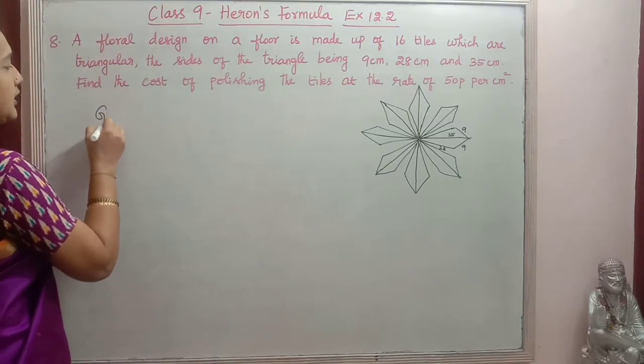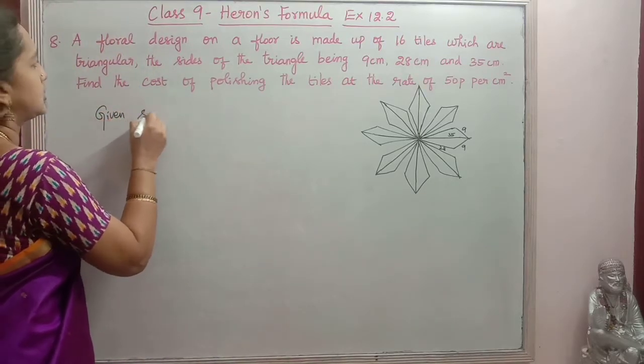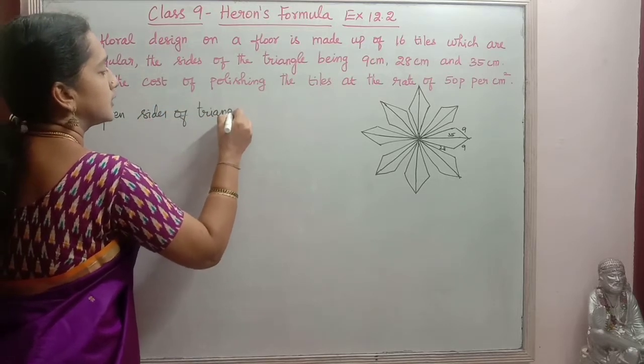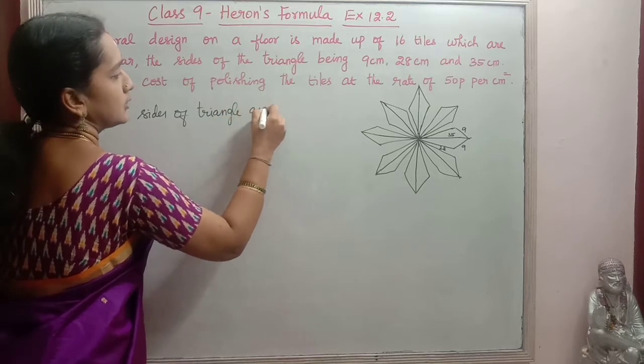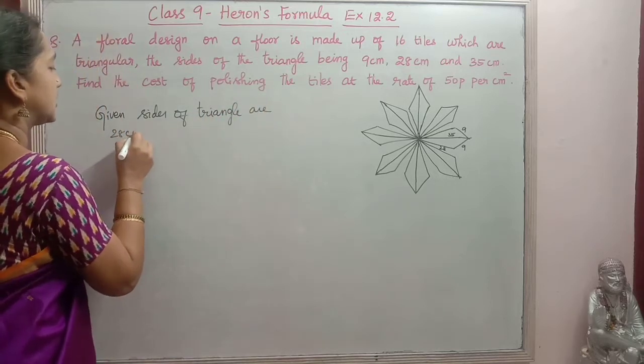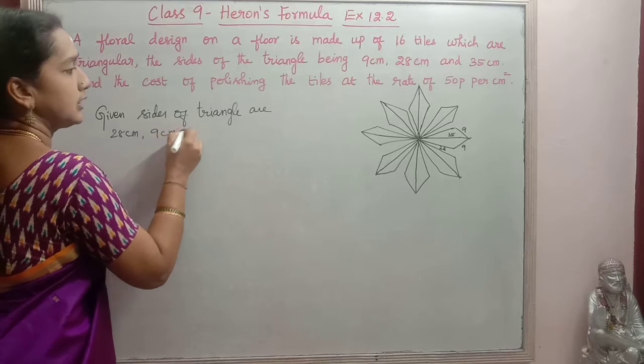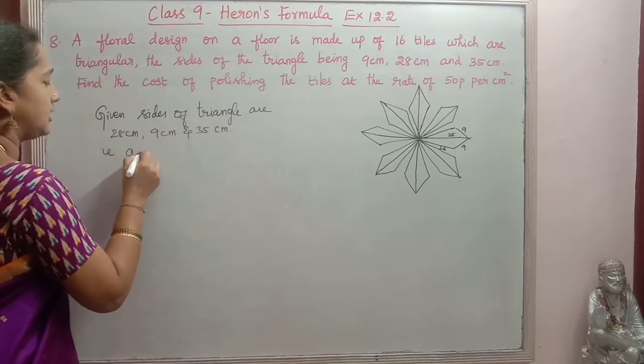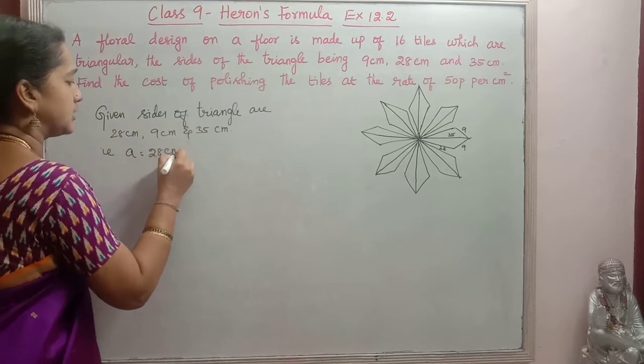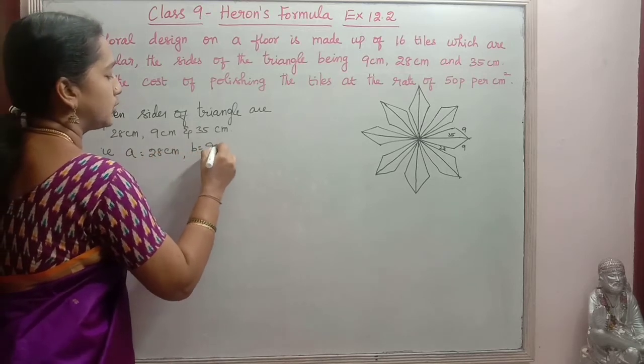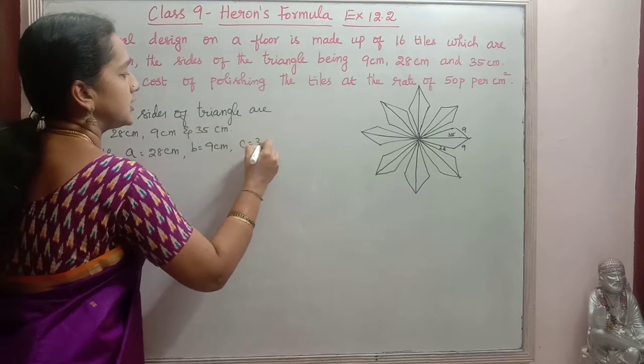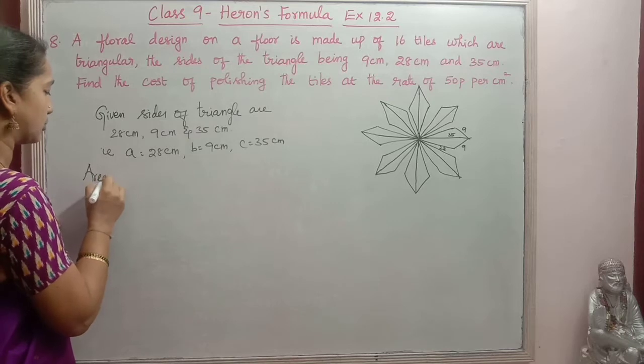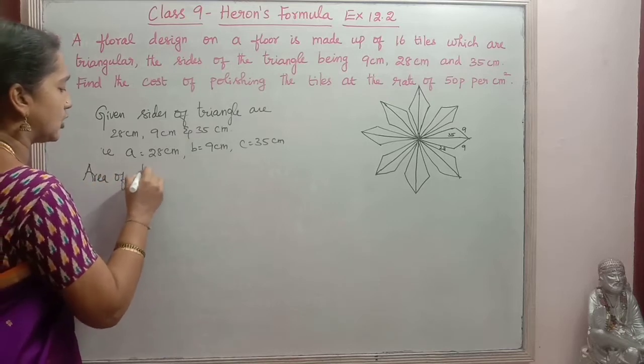So given sides of triangle, sides of triangle are 28 cm, 9 cm and 35 cm. That is we can take a is equal to 28 cm, b is equal to 9 cm, c is equal to 35 cm. So now we will use Heron's formula to find the area of triangle.